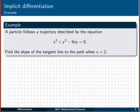Let's have a look at another example. This time it's a little bit applied. We're talking about a particle which follows a trajectory which can be described by this equation, an implicit relationship between x and y: x cubed plus y cubed minus 9xy is equal to 0. Again, an implicit relationship because we can't really rearrange it and get y equal to an explicit function of x alone. And the question asks us to find the slope of the tangent line to the path when x is equal to 2. Well, we know that the slope of the tangent line to a curve is just its derivative. So we need to find dy dx and evaluate it at x equals 2.